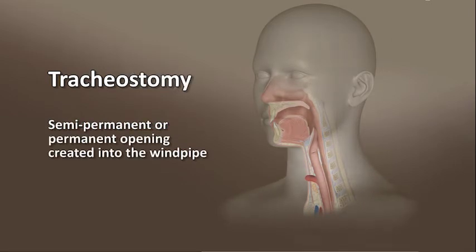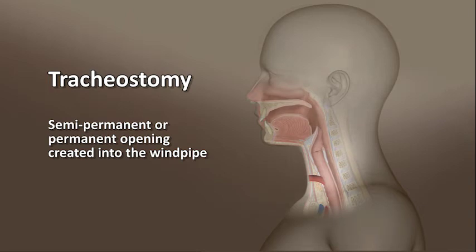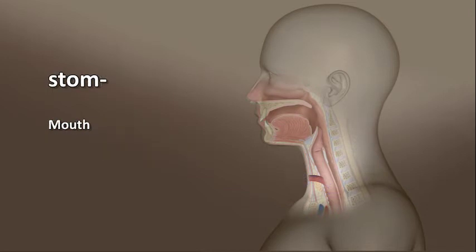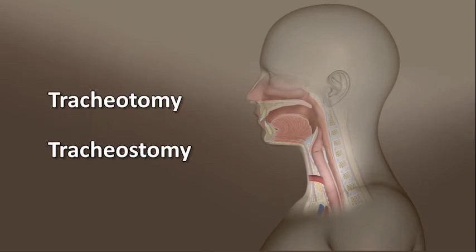Closely related is the term tracheostomy. This is a permanent or semi-permanent opening created from the outside into the windpipe. This is derived from the root 'stome,' which means mouth. Both terms refer to a small opening in the neck to create a new path for air to get into the windpipe, and because of this, the terms are often used interchangeably by many people.